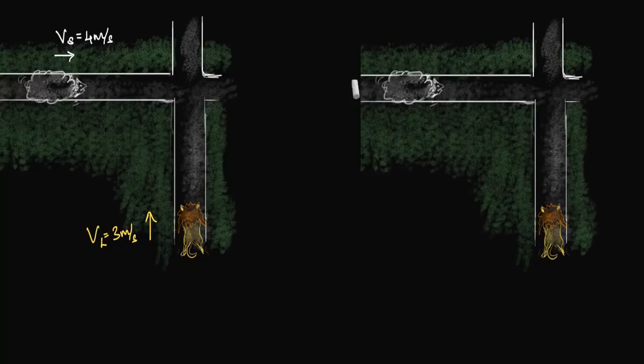Now comes the big question. What will the lion see the sheep doing? Think about it. The sheep is moving four meters per second on the road, on the ground, but the ground itself is traveling backwards three meters per second. So to figure out the relative velocity of the sheep seen from the lion's point of view, we will wait for one second and figure out where the sheep ends up.